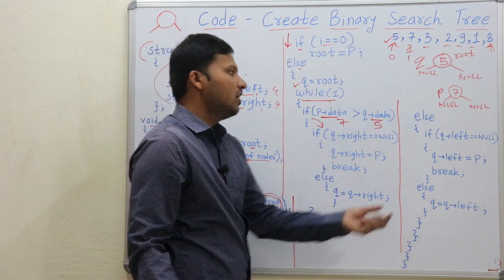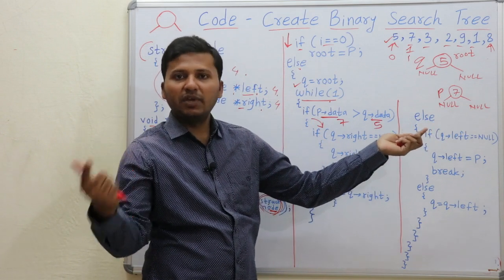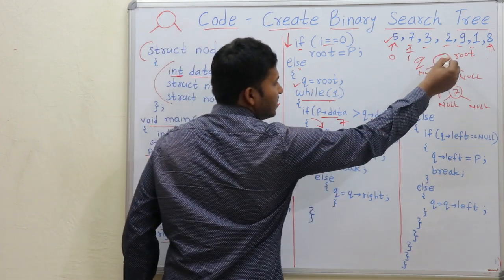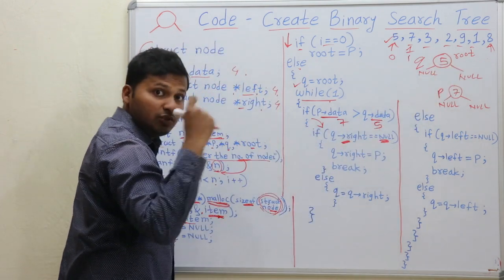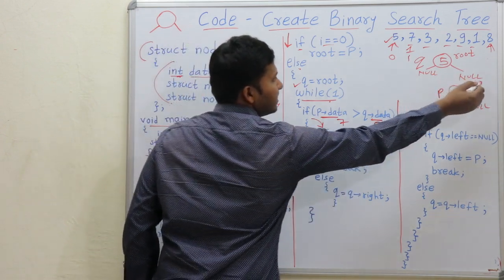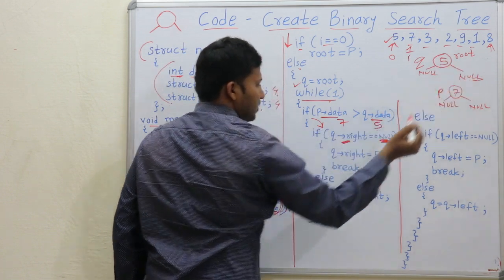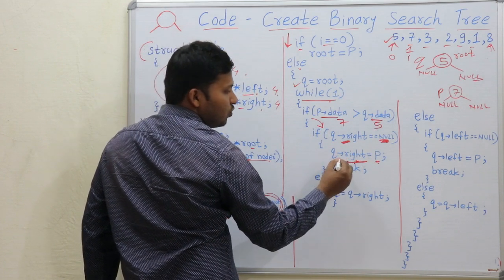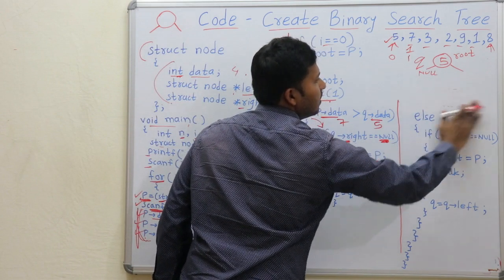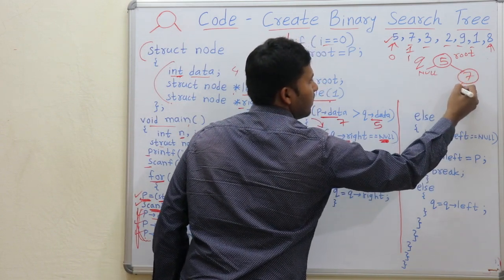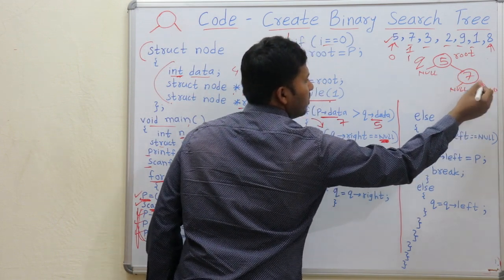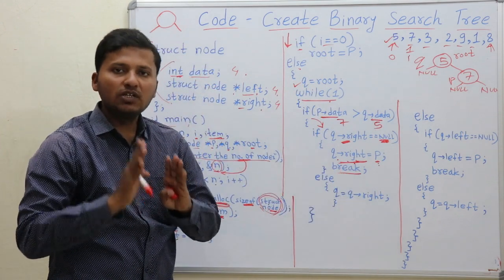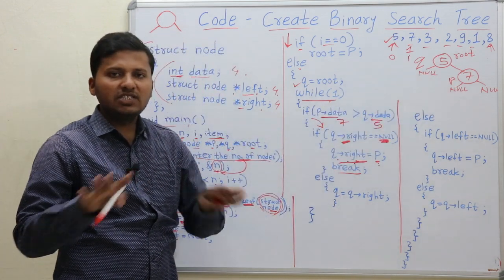Check if q points right equal to equal to null. Whenever an element is greater than its parent it goes to the right, so we check whether there is an empty place at the right of q. Yes, there is an empty place. So we keep node p at the right side of q: q points right equal to p. Node 7 is placed at the right side with null left and null children, and then we break since we have found the correct position.